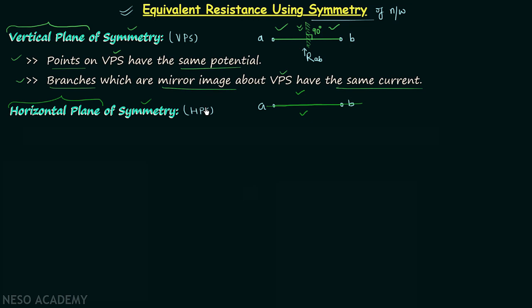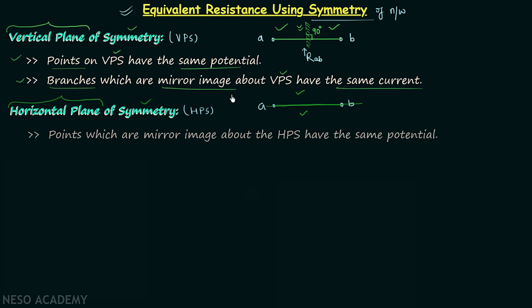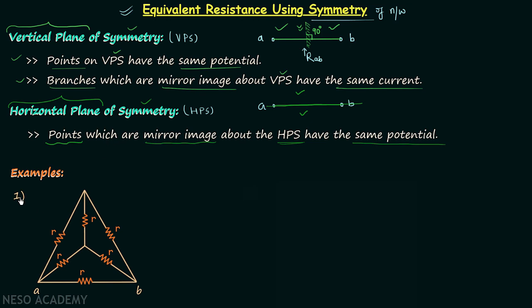If the upper portion of the network is symmetrical to the lower portion with respect to the horizontal plane, we call it horizontal plane of symmetry. There is one important point: all the points which are mirror images about the horizontal plane of symmetry have the same potential — very important. This will be more clear when we take our examples.